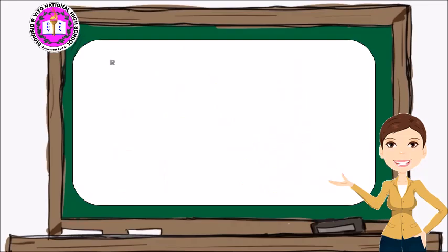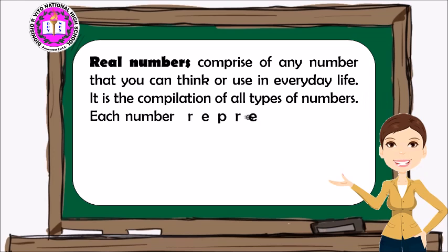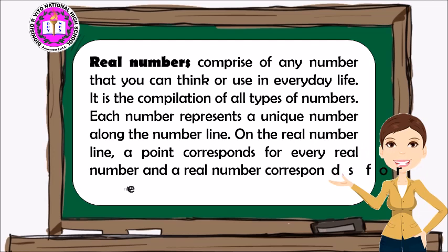Now let's begin our discussion about real numbers. Real numbers comprise any number that you can think of or use in everyday life. It is the compilation of all types of numbers. Each number represents a unique point along the number line. On the real number line, a point corresponds to every real number, and a real number corresponds to every point.